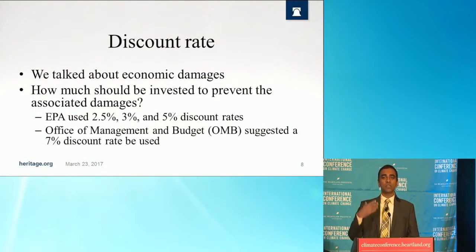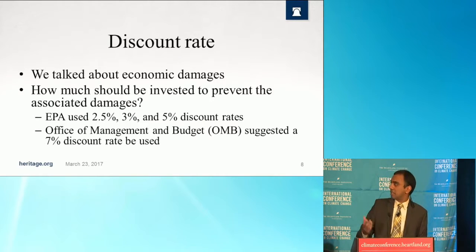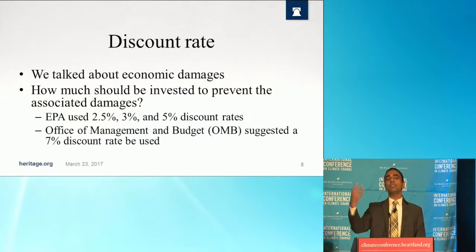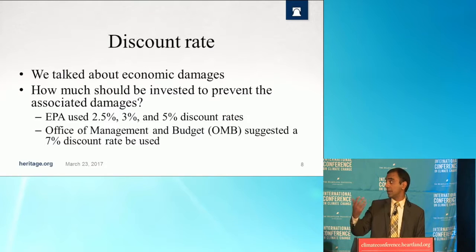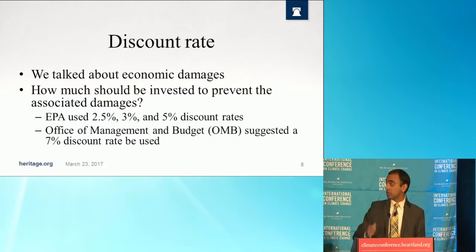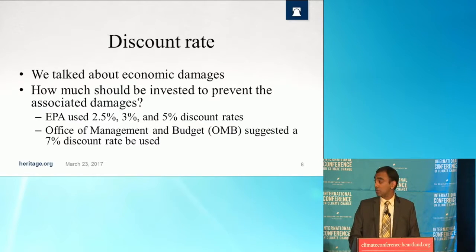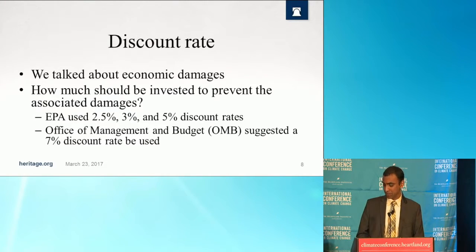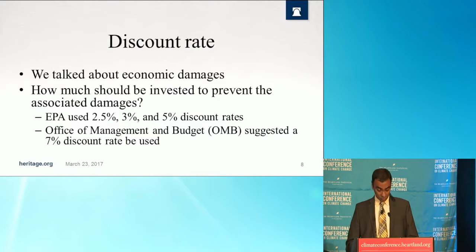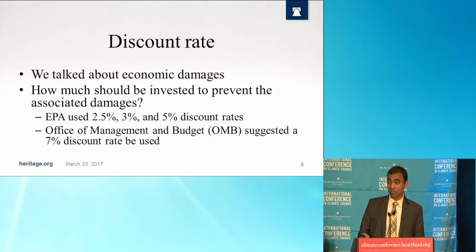Regarding these assumptions, firstly there's a discount rate. We talked about economic damages, but the real question is: supposing there actually are damages, what amount should be invested to avert them? The EPA used 2.5, 3, and 5 percent discount rates, despite the fact that the Office of Management and Budget in Circular A4 specifically stipulated that a 7 percent discount rate be used as part of cost-benefit analysis. The IWG ignored it, but we ran these models at 7 percent for them.